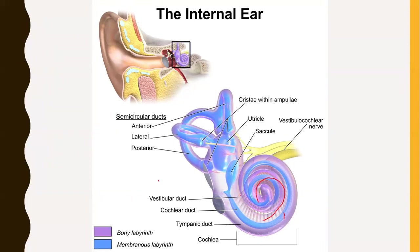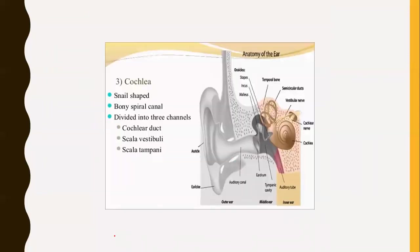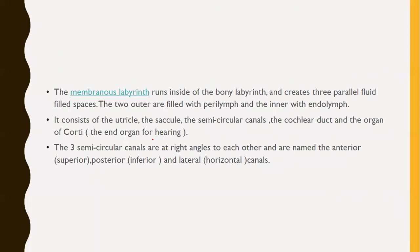The cochlea is snail-shaped. It is a bony spiral canal divided into three channels: the cochlear duct, scala vestibuli, and scala tympani. The next type is the membranous labyrinth, which runs inside the bony labyrinth and creates three parallel fluid-filled spaces. The two outer spaces are filled with perilymph and the inner one with endolymph, which is why conduction is possible.